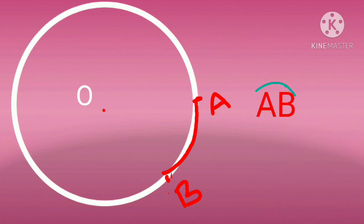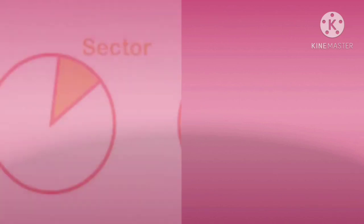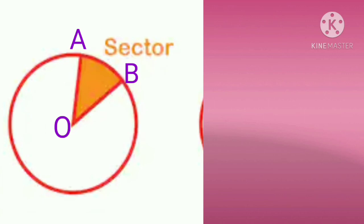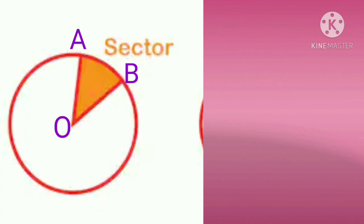The next part is sector. A region in the interior of a circle enclosed by an arc on one side and a pair of radii on the other two sides is called a sector. So, if there is an arc and two radii connecting to the center, that enclosed portion is called a sector.